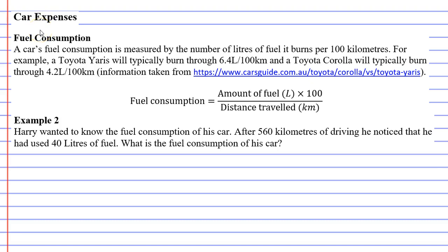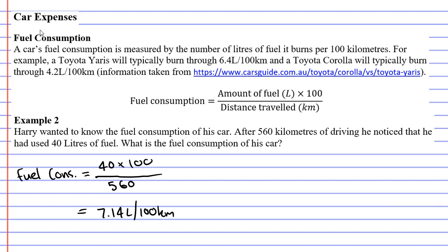Let's do it first with the formula. Fuel consumption is a fraction: amount of fuel in litres — he used 40 litres — times 100, over the distance travelled — he travelled 560 kilometres. So 40 times 100, divided by 560, comes out to about 7.14 litres per 100 kilometres. That means every time he travels 100 kilometres, his car has burned 7.14 litres.